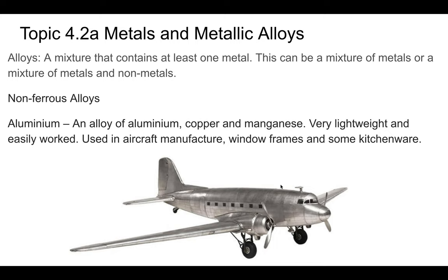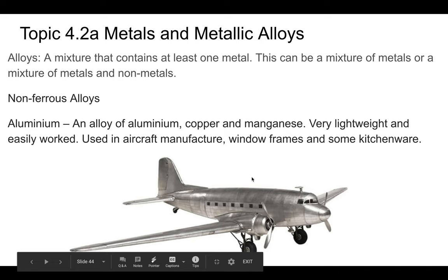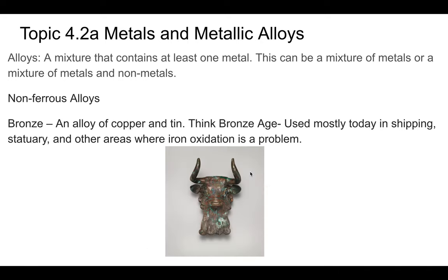Interestingly, when aluminum was first smelted it was very expensive. In fact, the capstone at the very top of the Washington Monument — the obelisk in Washington DC — is actually made of aluminum because it was so costly back then. Today aluminum is quite cheap because it's no longer as difficult to extract from bauxite ore.